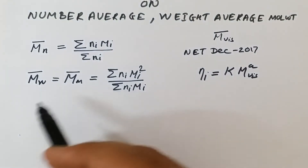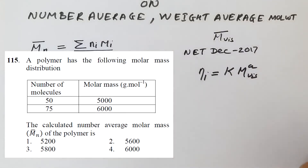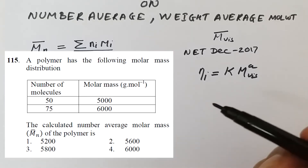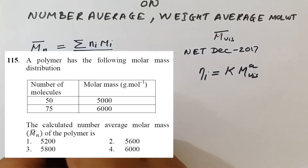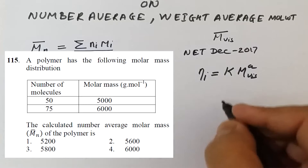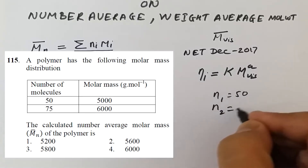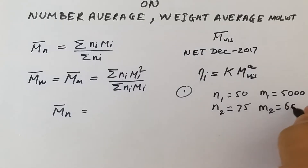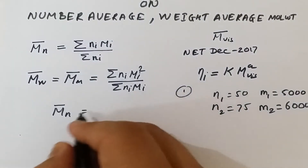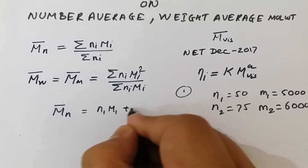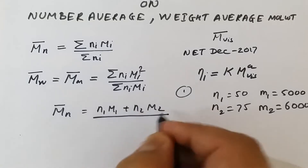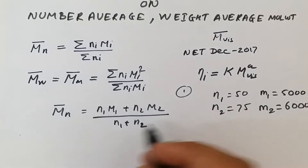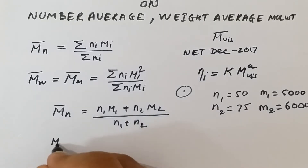For the CSIR NET December 2017 numerical, we have the number of molecules: N1 = 50 and N2 = 75, and their molar masses: M1 = 5000 g/mol and M2 = 6000 g/mol. We need to calculate the number average molecular weight. Substituting into the formula: N1·M1 + N2·M2 divided by N1 + N2.